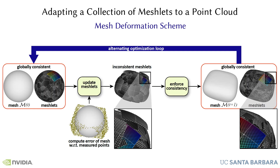For a point cloud larger than the extent of a single meshlet, we propose a mesh deformation scheme. First, we initialize an auxiliary mesh and sample meshlets on it; the meshlets are consistent in the overlapping regions by construction. Next, we update the meshlets to better match the observed points by computing the error gradients on the surface of the mesh, passing those gradients to the corresponding meshlet vertices, and updating them. Since we update these meshlets independently of each other, they might become inconsistent in the overlapping region. To address this, a third step adapts the meshlets in the auxiliary mesh and enforces consistency. We then iterate.